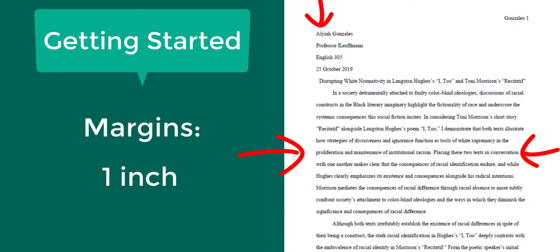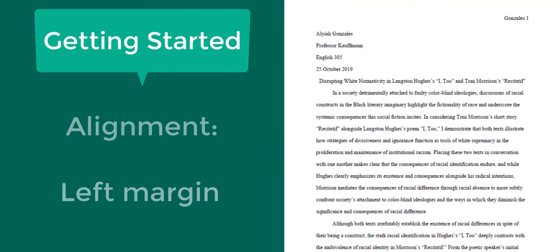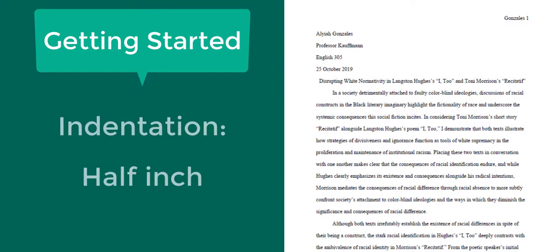Use 1 inch margins on every side of the page. Align the text of an MLA style paper to the left margin and leave the right margin uneven. Indent the first line of each paragraph of text a half inch from the left margin. This is automatically done in word processing programs or you may use the tab key.